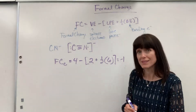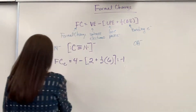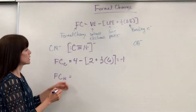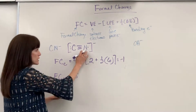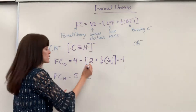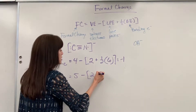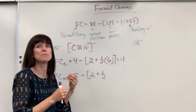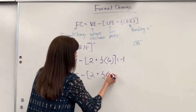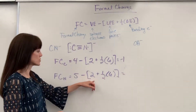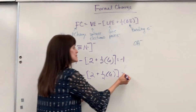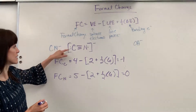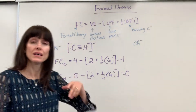Now formal charge for nitrogen: five valence electrons, minus two lone pair electrons (one lone pair), plus one half times six bonding electrons. The math: three plus two is five; five minus five is zero. So using formal charge, I predict that the extra electron attaches to the carbon.